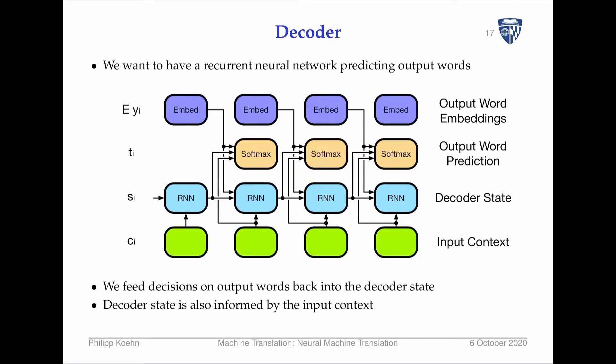We also want the process of generating the output sentence to be informed by the input, so there needs to be some representation of the input context also informing both the recurrent state and the prediction being made. We could have the input context only inform the recurrent state, but as before we want it to have direct impact on the prediction. It's currently unclear what that input context is — some representation of the input sentence relevant at this point in time — and that's what we'll turn to next.